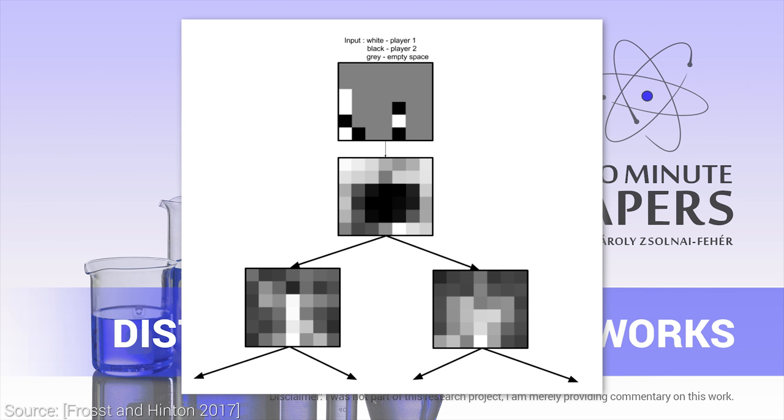It is shown that these trees perform better than traditional decision trees. What's more, they are only slightly worse than the corresponding neural networks, but can explain their decisions much more clearly, and are also faster.